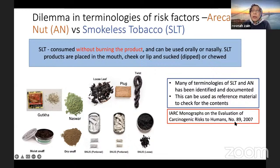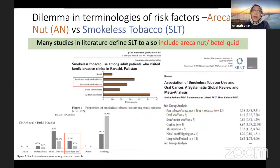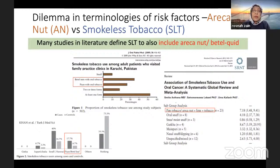The IARC monograph has tabulated definitions of the content of all these products. I would suggest that anyone working in this area, especially researchers, go to the monograph and look at the contents, then categorise them into either areca nut or smokeless tobacco. The dilemma is that up until now, since 1999 when we tried to sort out the terminology issue, many papers still use 'betel nut,' 'areca nut,' and 'betel quid' interchangeably.